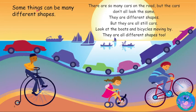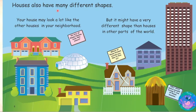Some things can be many different shapes. There are so many cars on the road, but the cars don't all look the same — they are different shapes, but they are all still cars. Look at the boats and bicycles moving by; they are all different shapes too.